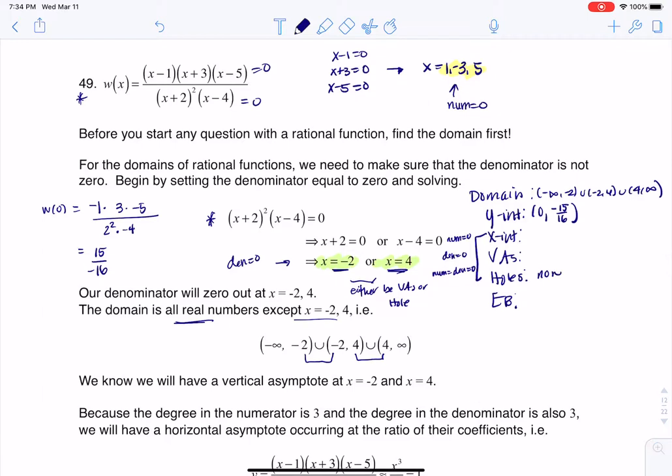So there is no hole. I don't have anything common to the numerator and denominator, so I have three X-intercepts at one, negative three, and five. I want to write those as ordered pairs. And I have two VAs at negative two and four, and I'm going to write those as lines. And then we got to figure out what the end behavior is.